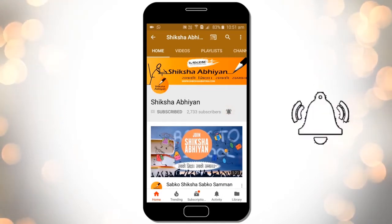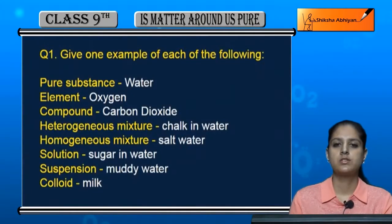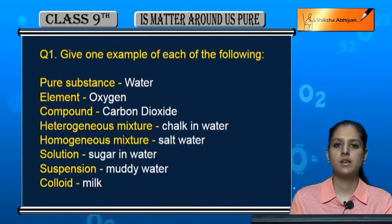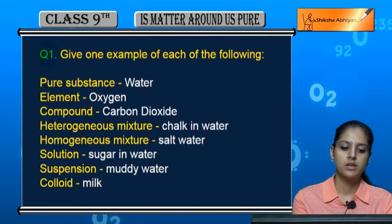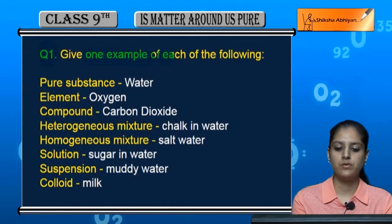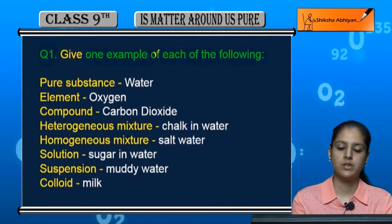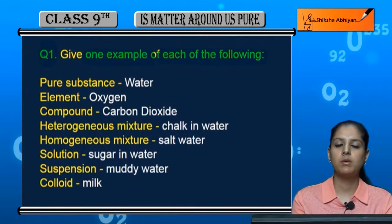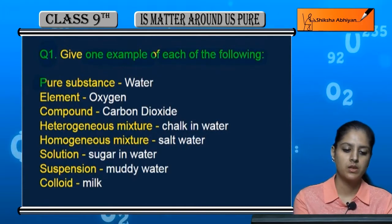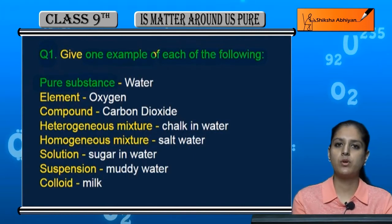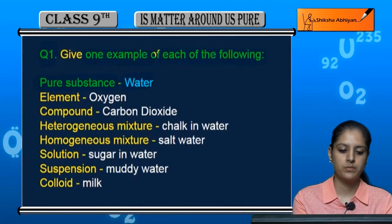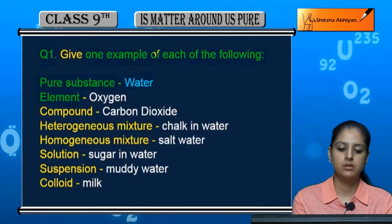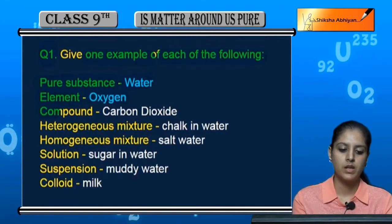Chapter number two is Matter Around Us Pure. We are taking up some extra questions. The first question is: give one example of each of the following. A pure substance — water is a pure substance. An element — oxygen is an element. A compound — carbon dioxide.